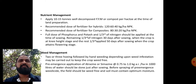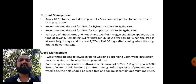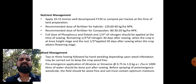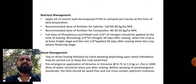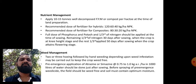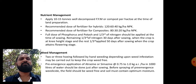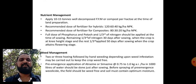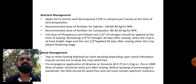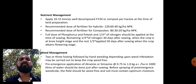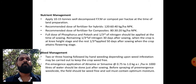Weed management: it is the most important aspect. We have to keep the plot weed-free during initial stages to avoid crop-weed competition. Two to three hoeing followed by hand weeding, depending upon weed infestation, may be carried out. Pre-emergence application of Atrazine or Simazine at the rate of 0.75 to 1 kg active ingredient per hectare in 1000 liters of water should be done. The field should be weed-free and soil must contain optimum moisture before spraying.